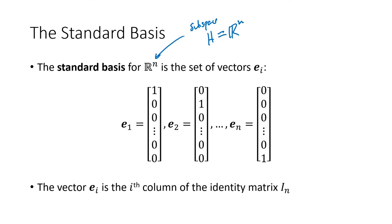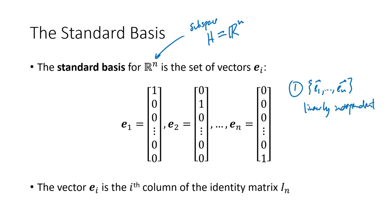A basis for Rn is the standard basis, the e vectors. E1 is the vector with a one in the first spot and zeros everywhere else. E2 has a one in the second spot and zeros everywhere else, and so on. These vectors have those two properties. The first property is that the e's have to be linearly independent. If we had a linear combination c1 times e1 plus c2 times e2 plus through cn times en to equal the zero vector...